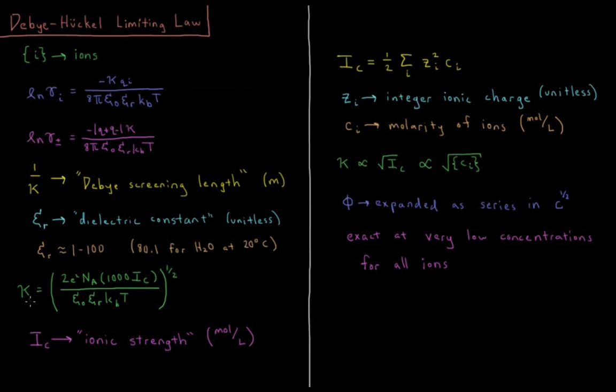The value κ, once we know the identity of the electrolyte, is equal to the square root of 2 times the charge of the electron squared times Avogadro's number times 1000 times the ionic strength of the solution in moles per liter, divided by ε₀ times the dielectric constant times the Boltzmann constant times the temperature. The only thing we need to find now is this quantity called the ionic strength.